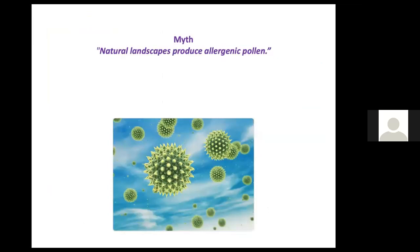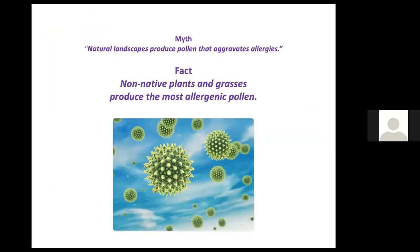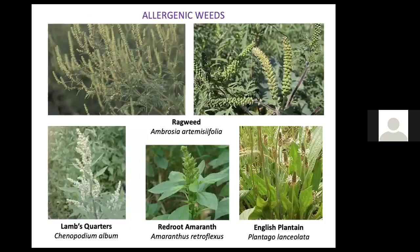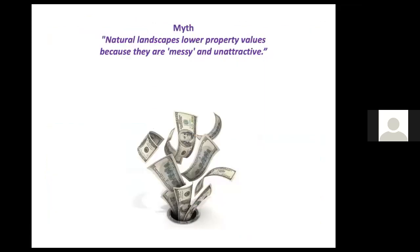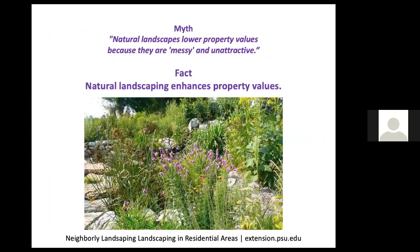Allergenic pollen is a concern for many, but the fact is that non-native plants and grasses produce the most allergenic pollen — wind-borne sources such as ragweed, lamb's quarters, red root amaranth, English plantain, and some grasses. We all want our properties to maintain or increase in value. It's been demonstrated that planting a single well-situated tree can add thousands of dollars to your property value. If the entire property is landscaped with nature in mind and done attractively, it's bound to significantly increase in value.